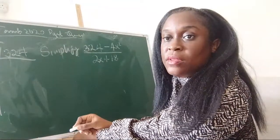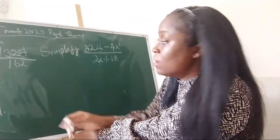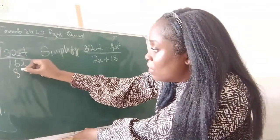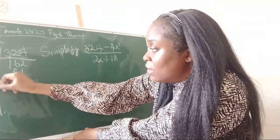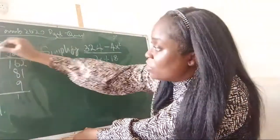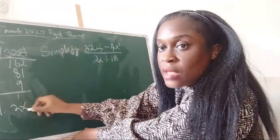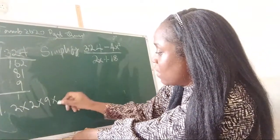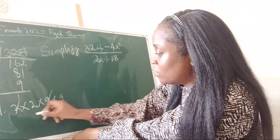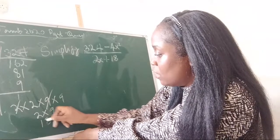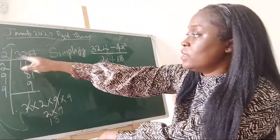Seeing 81, we know 9 goes into 81 nine times, and another 9 goes into 9 once. So we're left with 2 × 2 × 9 × 9. I can see a pattern that looks like a square root — cancelling one of each pair gives 2 × 9 = 18. So using the LCM method, the square root of 324 is 18.